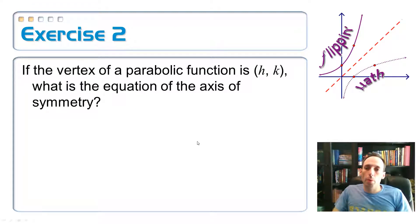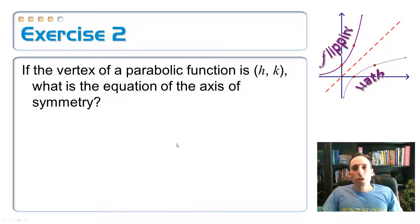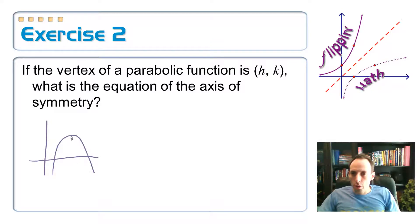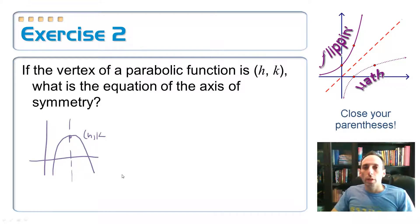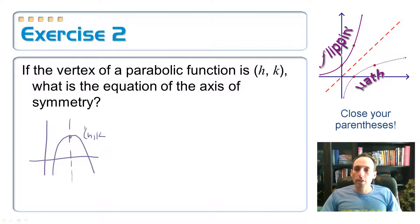If the vertex of a parabola is h comma k, just in general some variables, what is the equation of the axis of symmetry? So let me sketch you a little picture here. If I have myself a graph, why don't I go ahead and draw this one upside down like so. Here's my vertex. It's at h comma k, and my axis of symmetry is a vertical line that goes right straight through it, perpendicular to the x-axis. It's a vertical line.